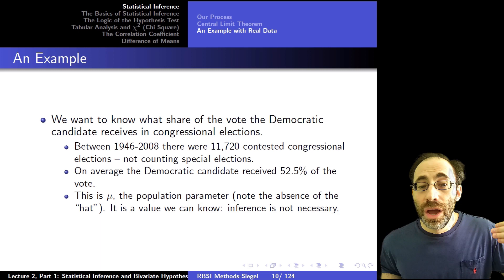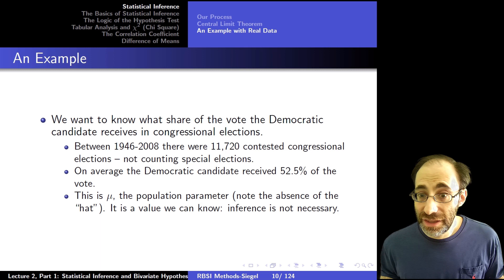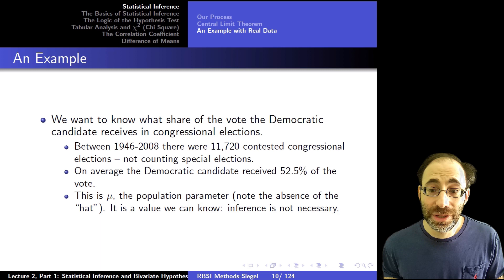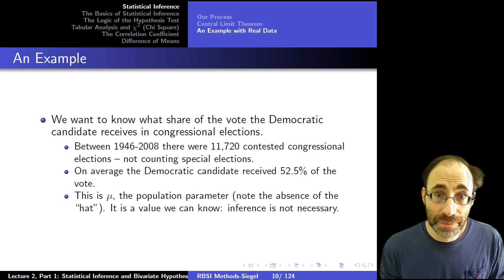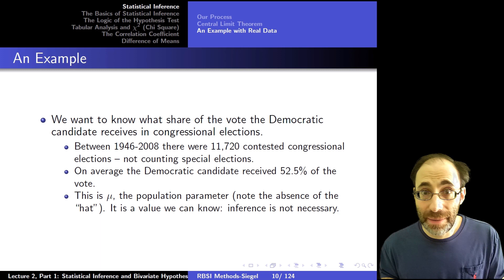Let's work through an example. We want to know the share of the vote the Democratic candidate receives in congressional elections. Between 1946 and 2008, there were 11,720 contested congressional elections, not including special elections — these are real data. On average, the Democratic candidate received 52.5% of the vote. That number is the population parameter mu — there's no hat, we're not estimating anything. We actually know that value because we've taken the whole population and calculated that mean, so no inference is necessary.